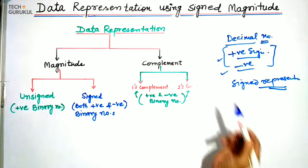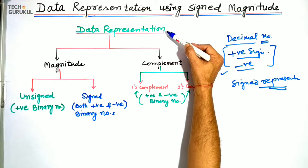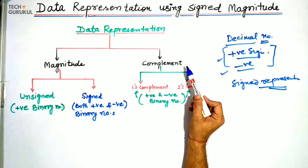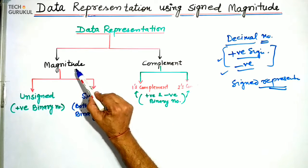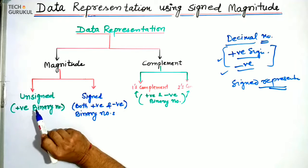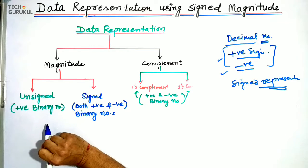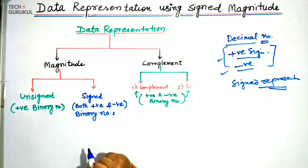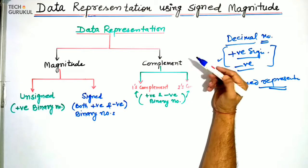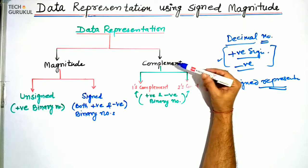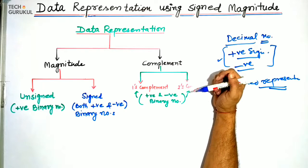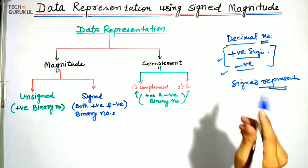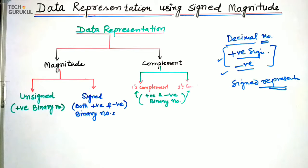We can classify data representation into two categories: one is magnitude and another is complement. In magnitude we can classify into unsigned numbers and signed numbers. Unsigned numbers are positive binary numbers, and signed numbers are both positive and negative binary numbers. In complement numbers there are one's complement and two's complement, which we have already studied in previous lectures, and we also did subtraction using ones and twos complement representation.